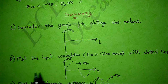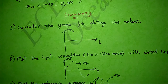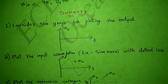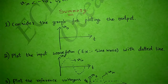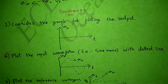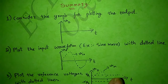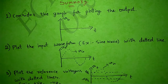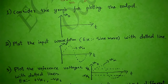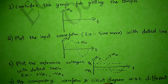The second step is to plot the input waveform with dotted lines. I considered a sine wave as input, so I represented this input waveform with dotted lines on the output graph.